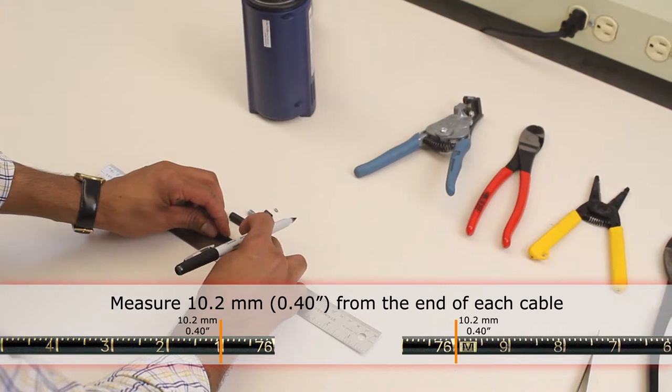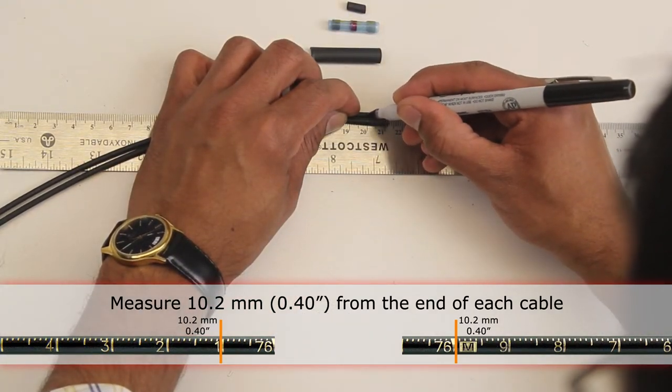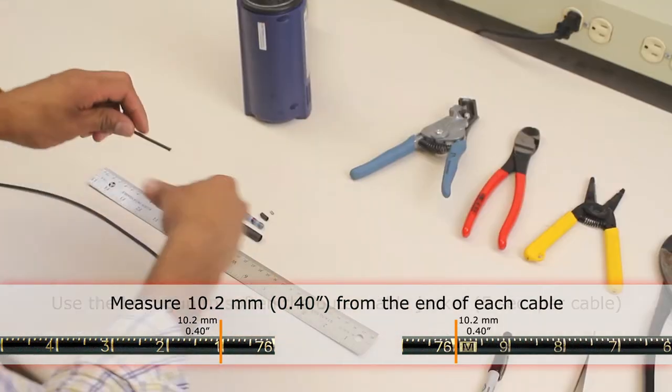Cut down to 10.2 millimeters, which is about the side. Arm them there. Heat them with a heat gun.